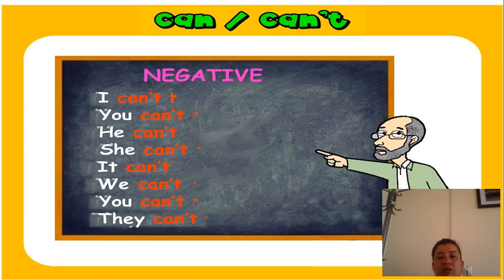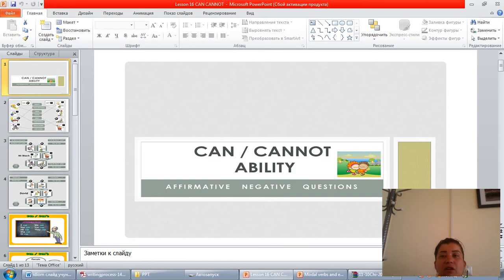For negative forms, you say: I cannot, you cannot, he cannot, she cannot, it cannot, we cannot, you cannot, they cannot. That's our lesson. Thank you for your attention.